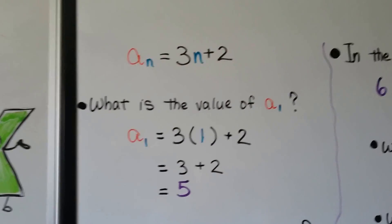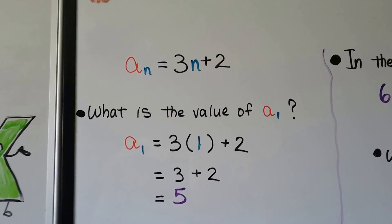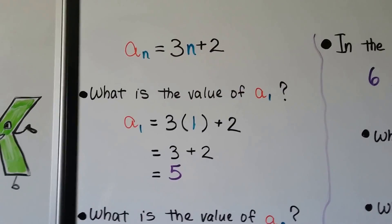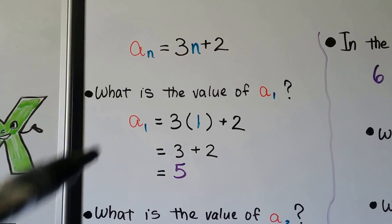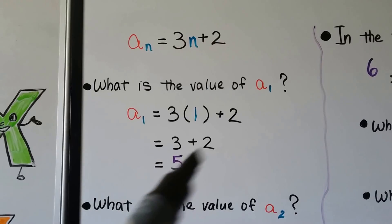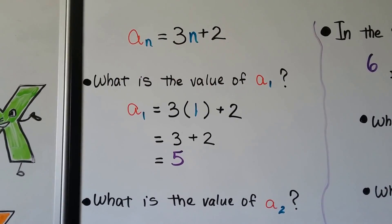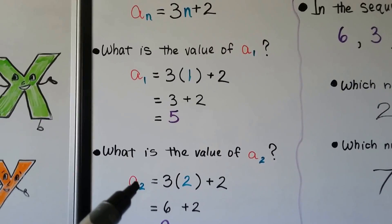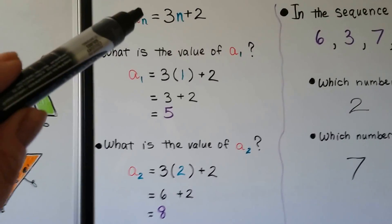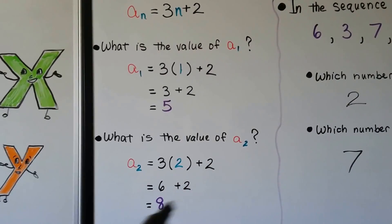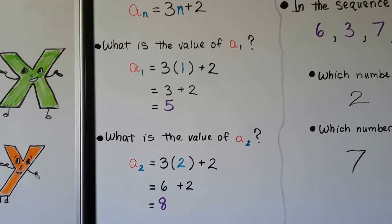Here we have a sub n is equal to 3 times n plus 2. So, what's the value of a sub 1? We just put a 1 where the n is. It's going to be equal to 3 times 1 plus 2. It's going to be equal to 5. What about a sub 2? We put a 2 here. That's the n. So, we're going to put a 2 here and multiply 3 times 2. We're going to get 6 plus 2, which is an 8. See how we did that?